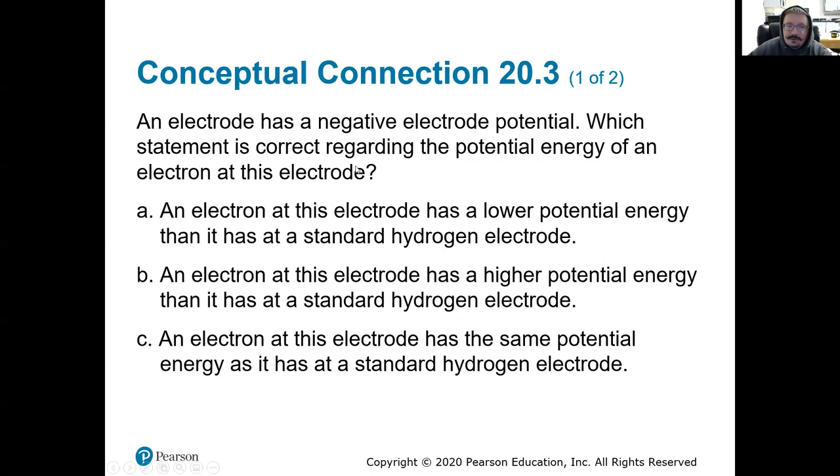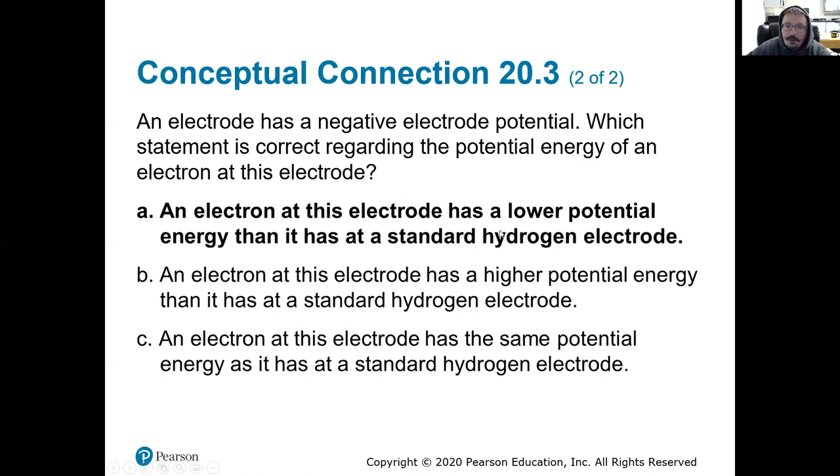So conceptually, how do we use this? An electrode has a negative electrode potential, which statement is correct regarding the potential energy of an electron at this electrode. The electron at the electrode has a lower potential energy than the SHE. So it's going to be below the SHE. The electron at the electrode has a higher potential energy. So it's going to be up here. And if the electron at this electrode has the same potential energy, it shouldn't be the same, because then it would be zero. So for us to have a negative electrode potential should be that it has a lower potential energy than it has at the SHE. So it's going to decrease essentially, or increase in stability, I should say.